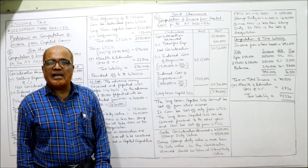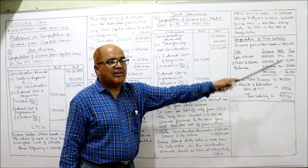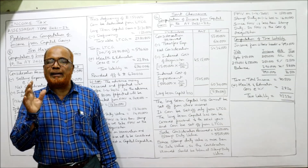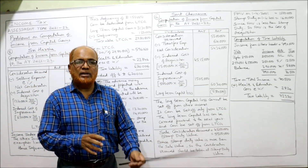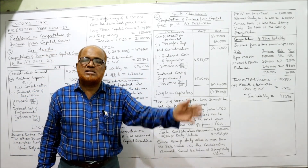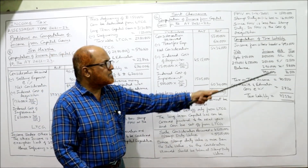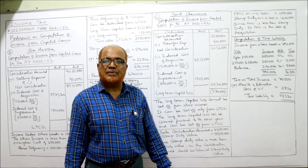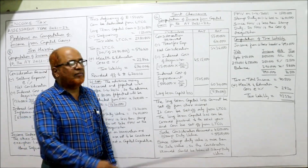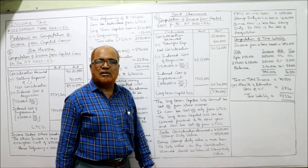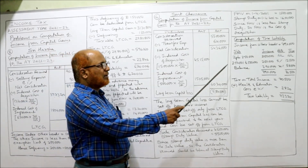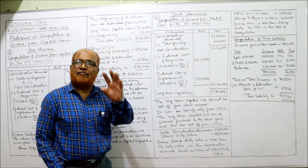Now computation of tax liability: income under other heads is Rs. 7,90,000 as given. There is no capital gain — there is a capital loss — and this capital loss should be carried forward to the next year. Current year income under other heads is Rs. 7,90,000. Applying the slab system: up to Rs. 2,50,000 — nil tax. Second slab: Rs. 2,50,001 to Rs. 5,00,000 — 5% tax on Rs. 2,50,000 = Rs. 12,500.